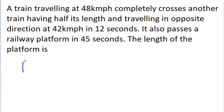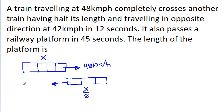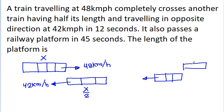We have a train traveling at a speed of 48 km per hour and suppose its length is x meters. Another train of half its length, that is x by 2, is traveling in the opposite direction at 42 km per hour. When they cross each other, one length is x by 2 and the other is x.